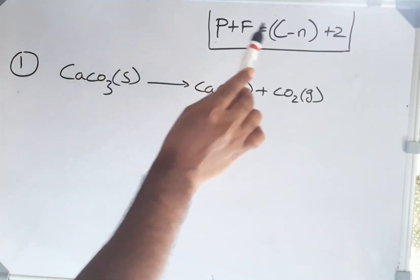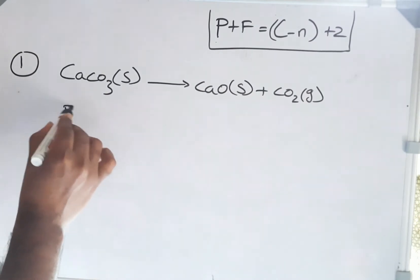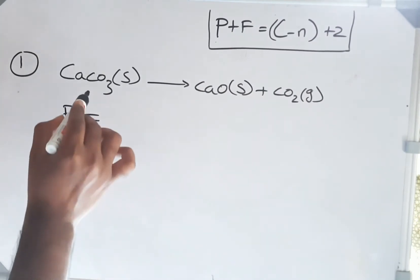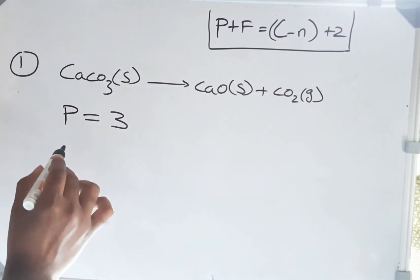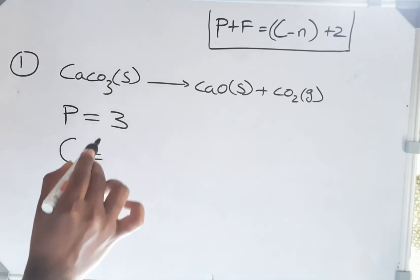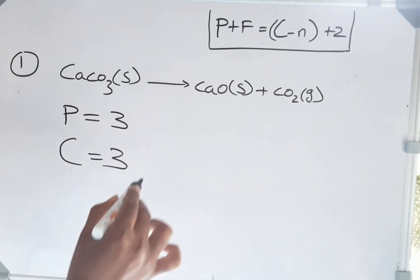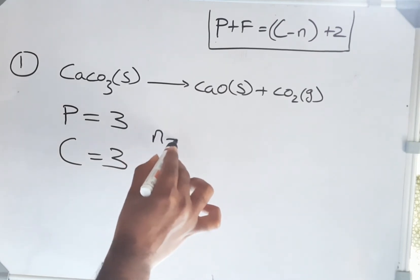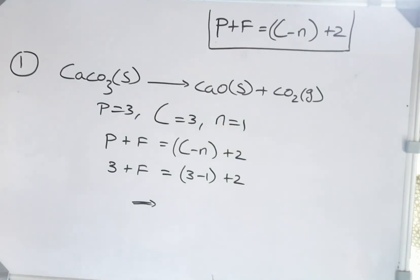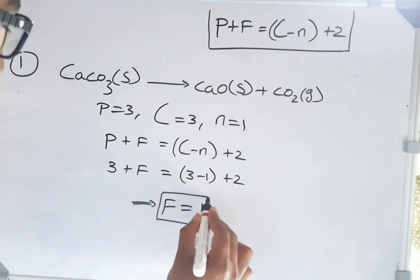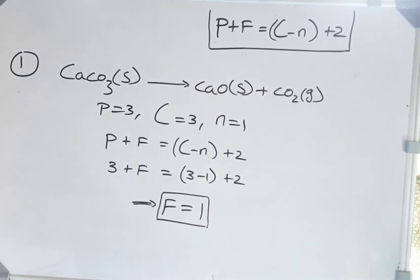Very simple. Now I'm going to find the number of phases. P equals 1, 2, 3. Number of components, capital C, is also 3. Number of reactions equals 1. Let's substitute these values in the formula. After substituting, we get F = 1. I hope you understood this properly. If you have any doubts, please drop a comment. I'd be very happy to reply.